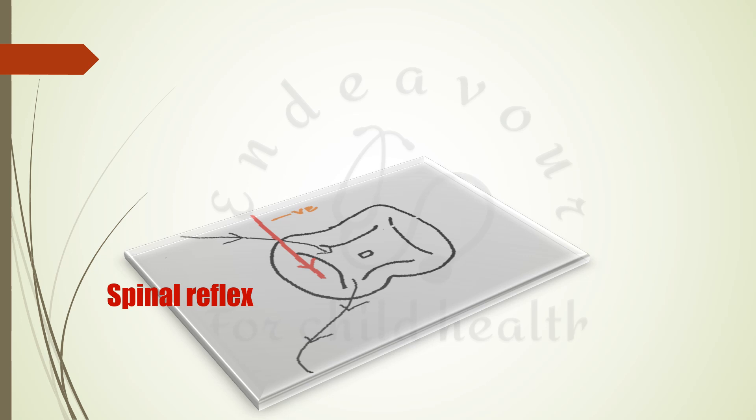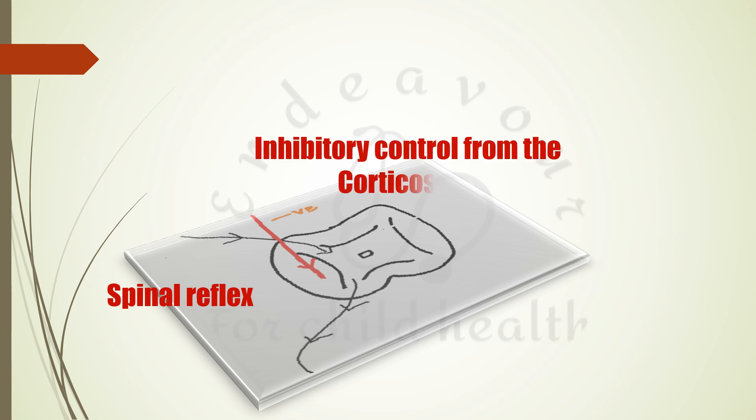Once the corticospinal tract is affected, the inhibitory control is lost and firing spreads on to L4, L5 anterior horn cells, leading to the contraction of toe extensors — that is extensor digitorum longus and extensor hallucis longus — via the deep peroneal nerve.